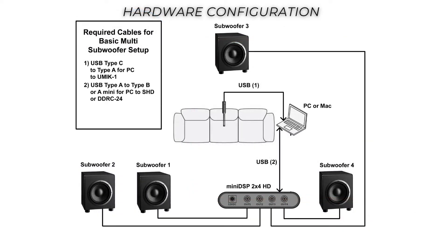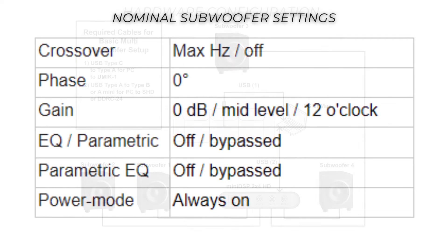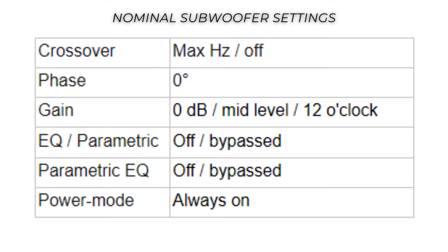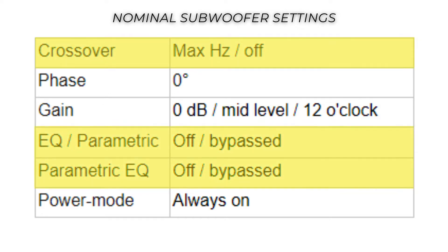Subwoofer placement will be driven by the number of subwoofers in your system, listening room configuration, and aesthetics. In general, spatial diversity is preferred. Be sure that all subwoofer cables are of good quality, adequate length, and securely connected. At this time, you can check that the built-in level, equalization, inversion, and crossover frequencies of the subwoofers are either bypassed or set to nominal. REW signals generated in your computer will be sent to the Mini DSP via USB. Your subwoofer should be set as you see here, so as to not interfere with the crossover and parametric equalization (PEQ) parameters that will be set up in the Mini DSP.